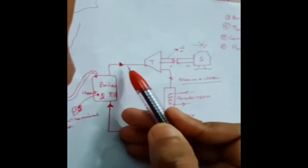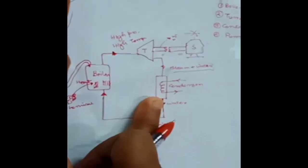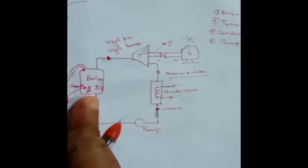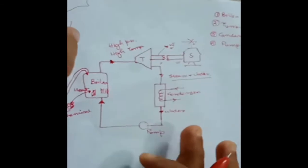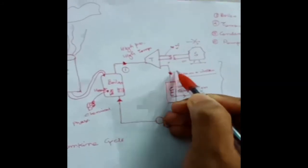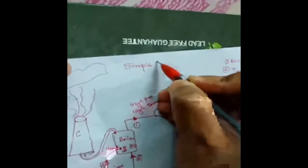From the boiler, high-pressure and high-temperature steam goes to the turbine. Then from the turbine it goes to the condenser, where it condenses — phase change occurs. Then from the condenser it goes to the pump, and after the pump it goes back to the boiler. This total power plant runs on the Rankine cycle. Let me give the nomenclature: the points are labeled one, two, three, and four. This is the simple Rankine cycle.